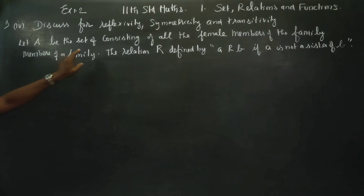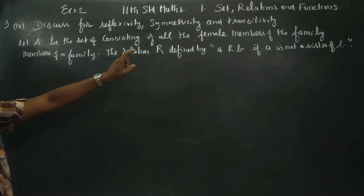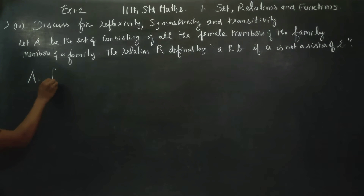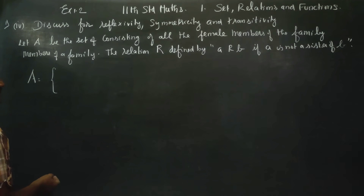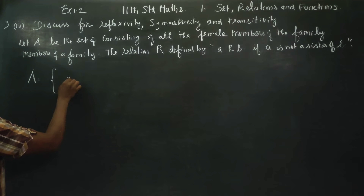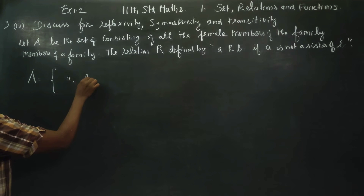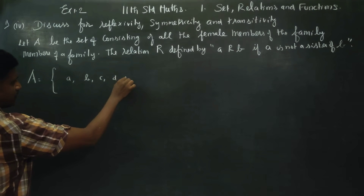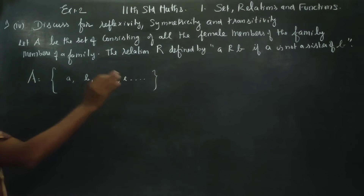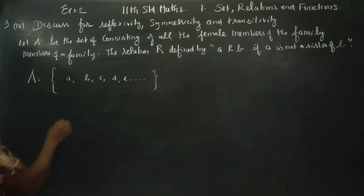Let A be the set consisting of all female members of a family. For example, A, B, C, D, E — all female members of a family.